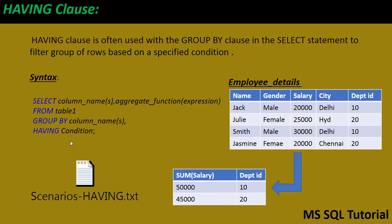The HAVING clause works like a WHERE clause if it's not used with GROUP BY. The difference between the HAVING clause and the WHERE clause is that the WHERE clause is used to filter individual rows, whereas the HAVING clause filters groups of rows. We'll see all of this demonstrated live.